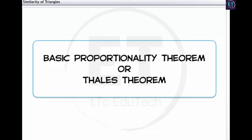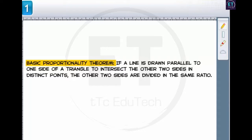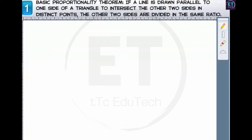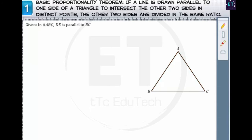This theorem is called the basic proportionality theorem, or the Thales theorem. It states that if a line is drawn parallel to one side of a triangle to intersect the other two sides in distinct points, then the other two sides are divided in the same ratio. In triangle ABC, a line drawn parallel to side BC intersects sides AB and AC at points D and E respectively. If we prove that AD/DB = AE/EC, then the theorem will be proved.